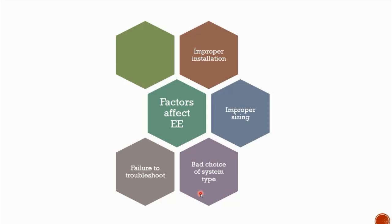The next factor is bad choice of system type, which can also affect your energy efficiency. Your options depend on where you live. For example, in the US, the most efficient units combine a natural gas furnace for heating and an electric unit for cooling. But if you live in a moderate climate, an air source heat pump may be your best choice. The last factor is failure to troubleshoot. An HVAC system works at its peak with a properly programmed thermostat, well-sealed ductwork, and adequate insulation.